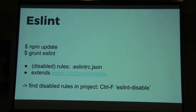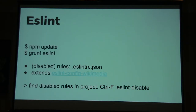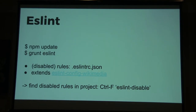Moving on, we have ESLint for JavaScript. It's similar — you can install it with npm update and then run Grunt to run the tests. You have the rules file, in this case eslintrc, a JSON file that extends existing rules from the Wikimedia environment. It's not really common that you find disabled rules there either, because the JavaScript code seems to be pretty clean. But you can search directly in the code for the eslint-disable keyword to find places where linting was turned off.